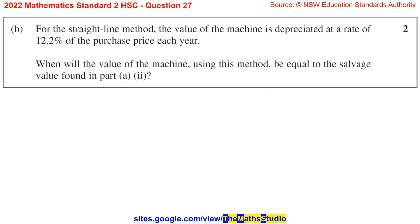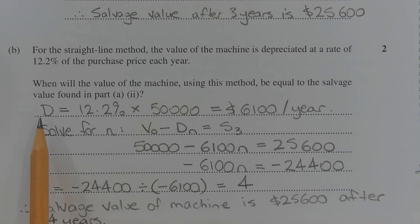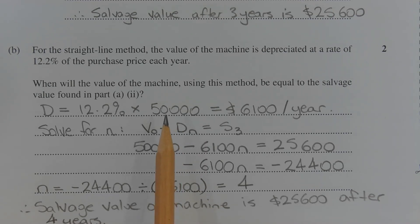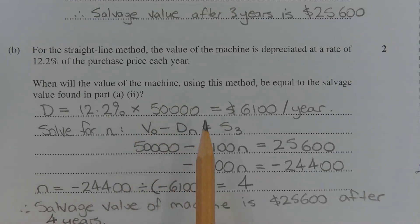Part B: For the Straight Line Method, the value of the machine is depreciated at a rate of 12.2% of the purchase price each year. When will the value of the machine using this method be equal to the salvage value found in Part A Part 2? The depreciation each year, D, using the straight line method is 12.2% of the purchase price of $50,000. So D equals 12.2% times 50,000, which equals $6,100 per year. The machine is losing $6,100 each year using the straight line method.